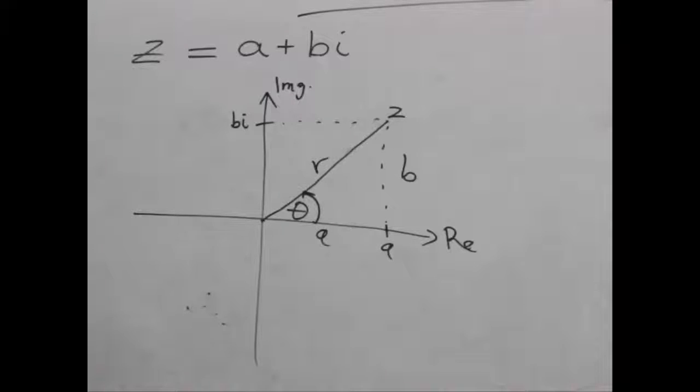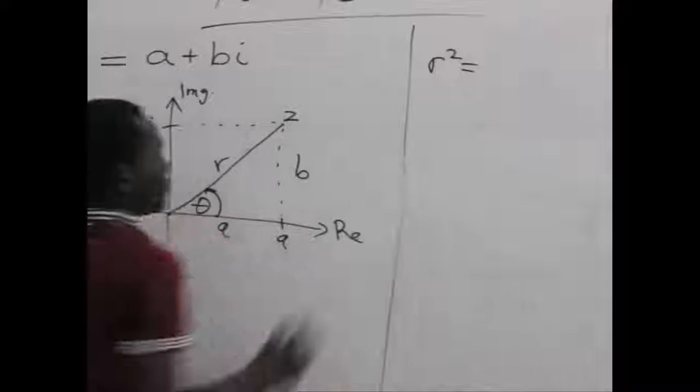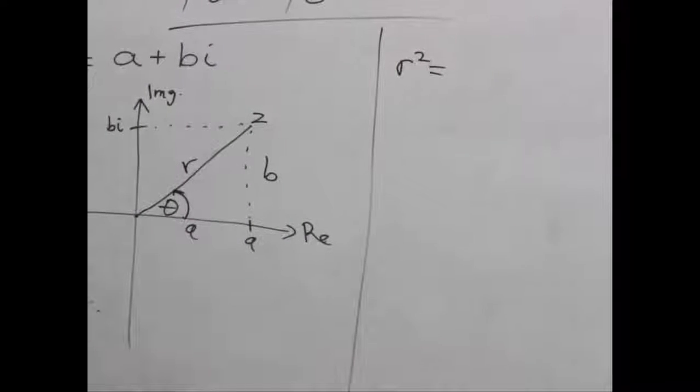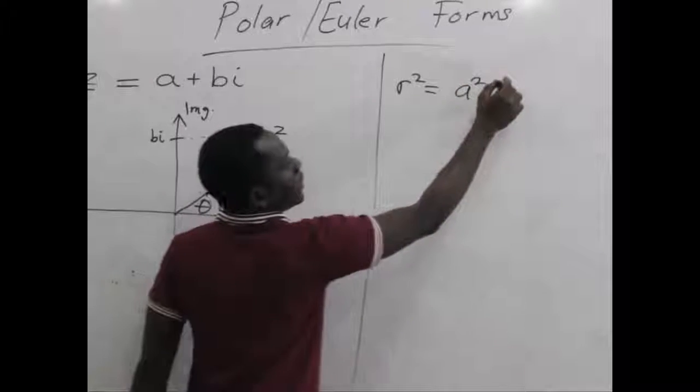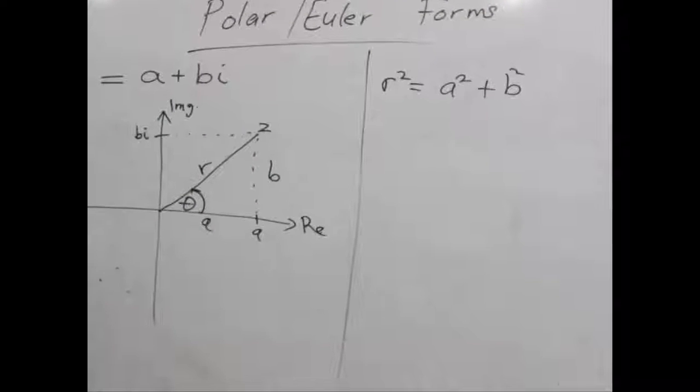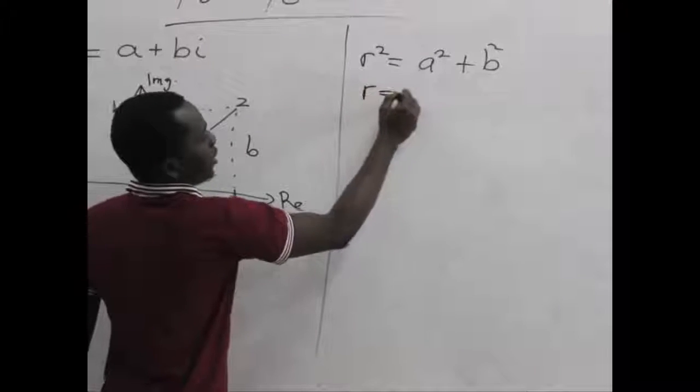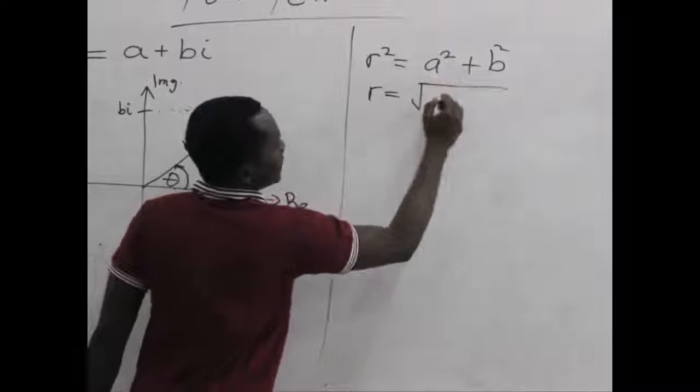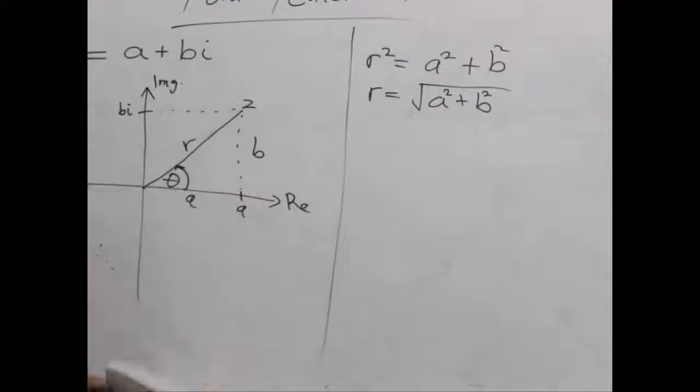So first, let's find an expression for R. Now, from Pythagoras' theorem, we can write R squared to be equal to A squared plus B squared by Pythagorean identity. So if you want R, R becomes the square root of the sum of A squared and B squared.